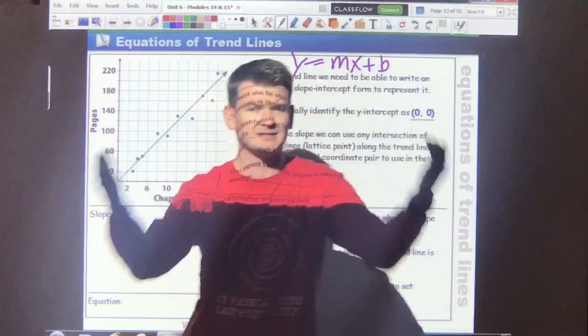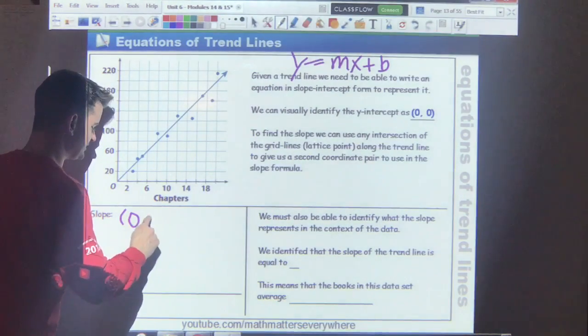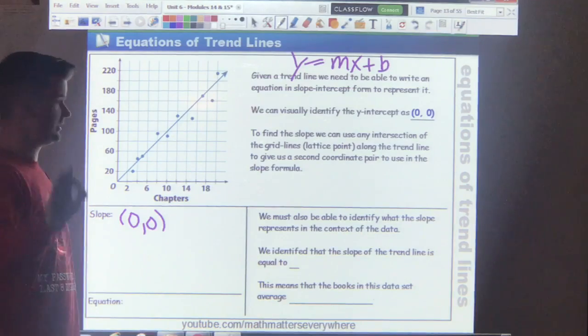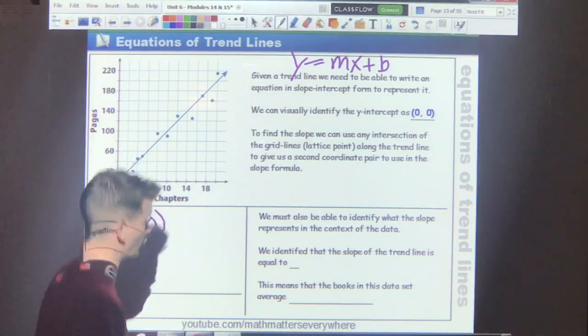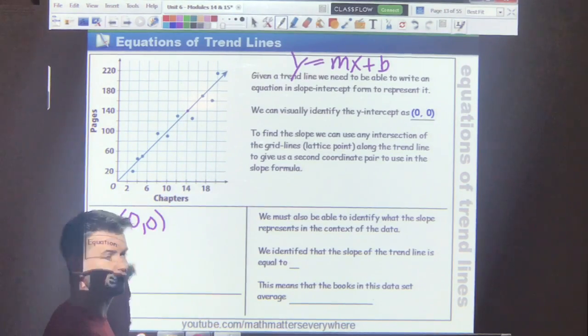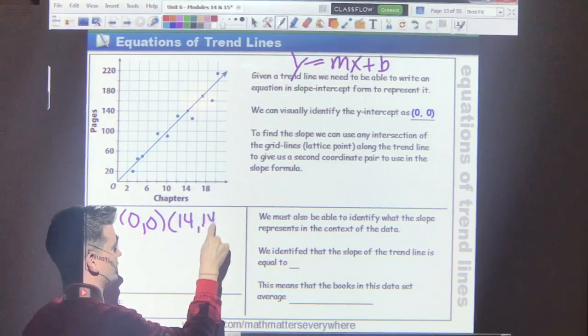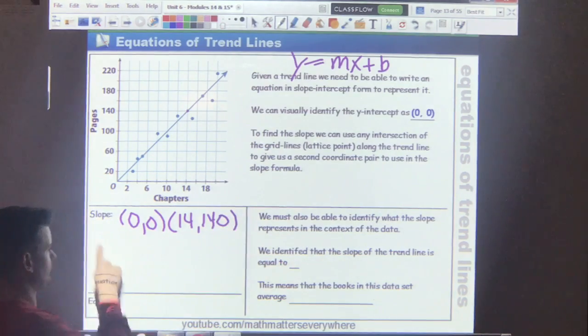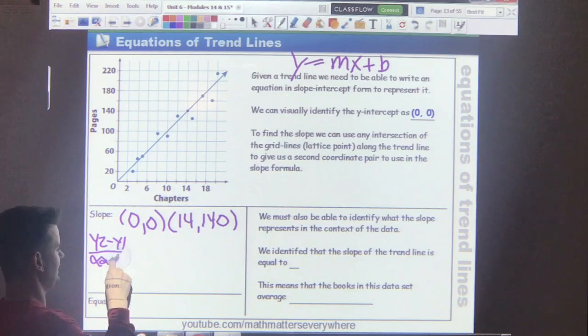But, I'm not using this point, or this point in my slope. I'm using any points from the line. Like I said, we visually identify the y-intercept as zero, zero, which is great, because that's an easy point that I can use for my slope. So, zero comma zero. I need one more coordinate pair for my slope. So, I'll use maybe 14 comma 140. That's a good one because it falls right there at a lattice point where the grid lines intersect. It's not going to be a decimal. I can visually see it's going to be 14 comma 140. I run this through my slope formula, which is y2 minus y1 over x2 minus x1.